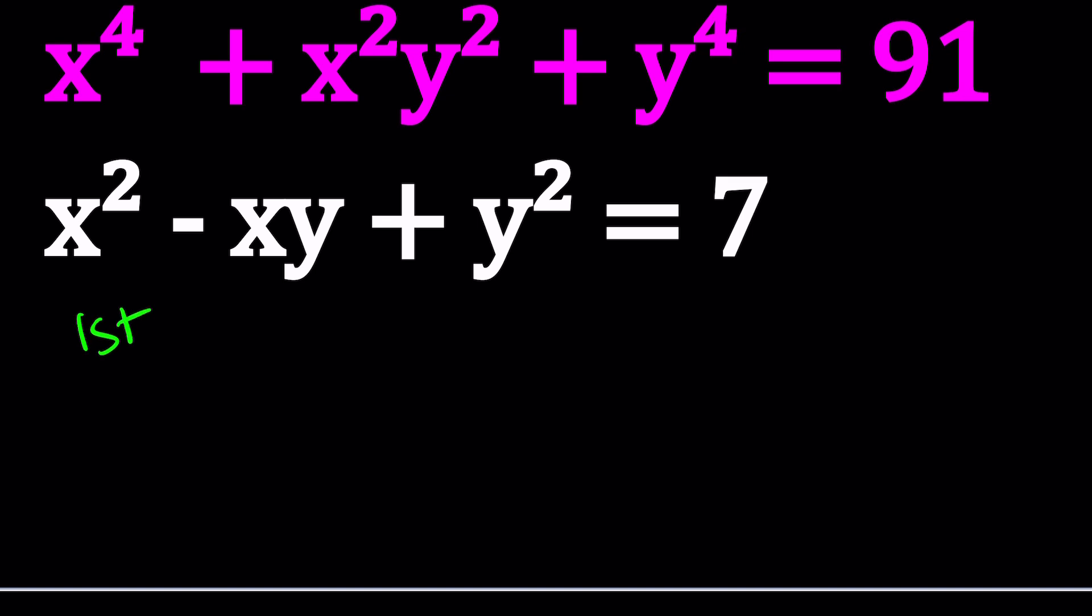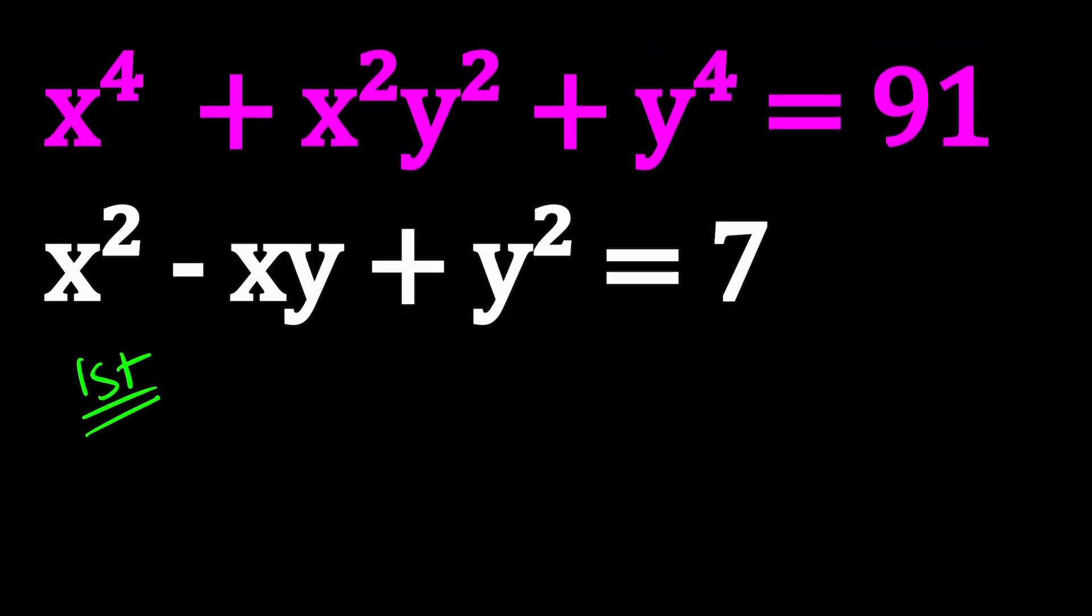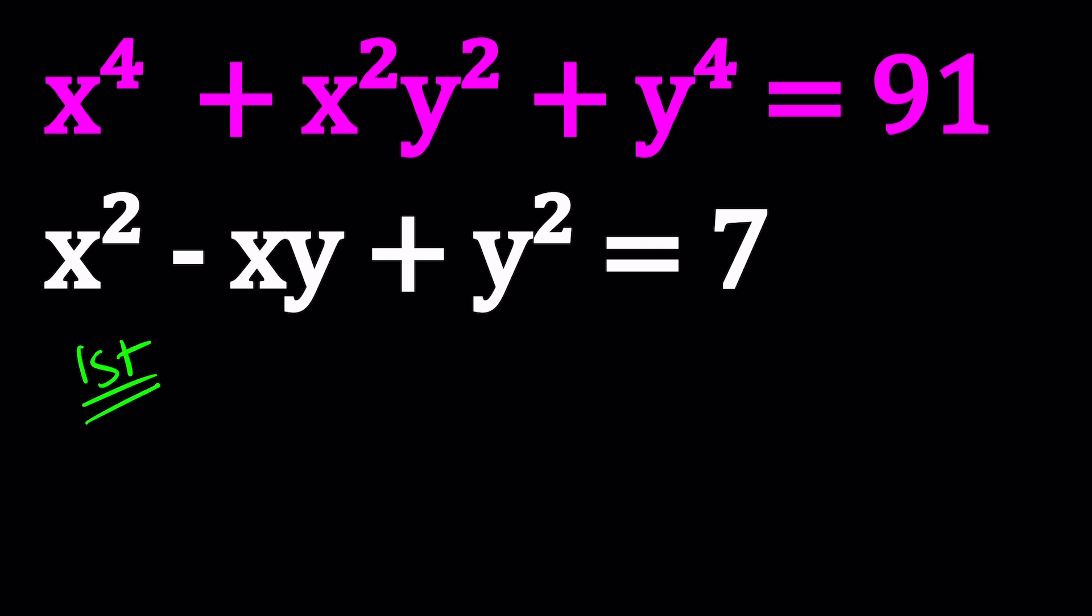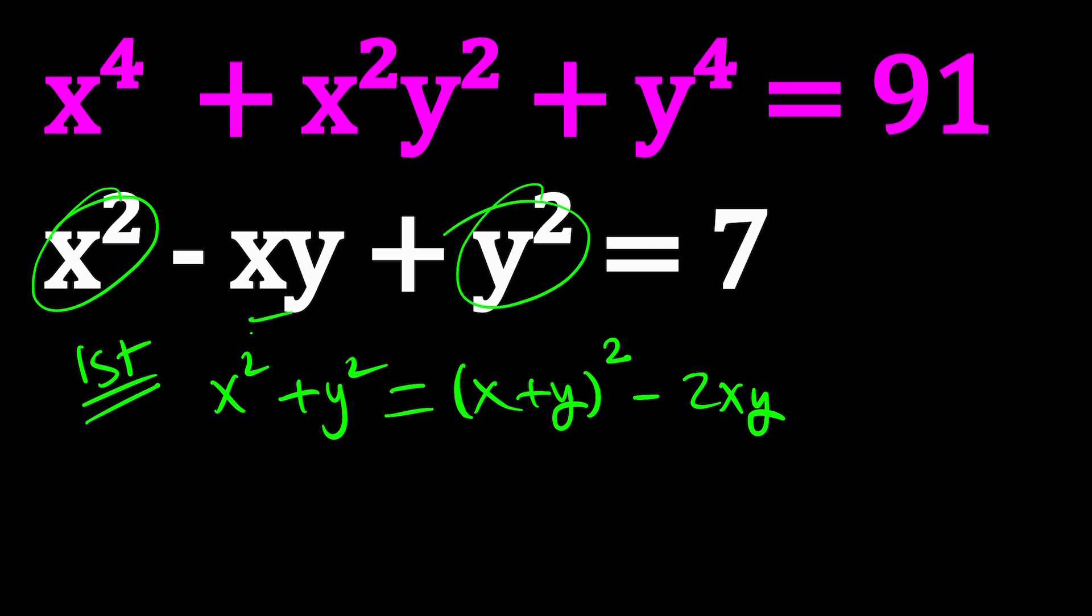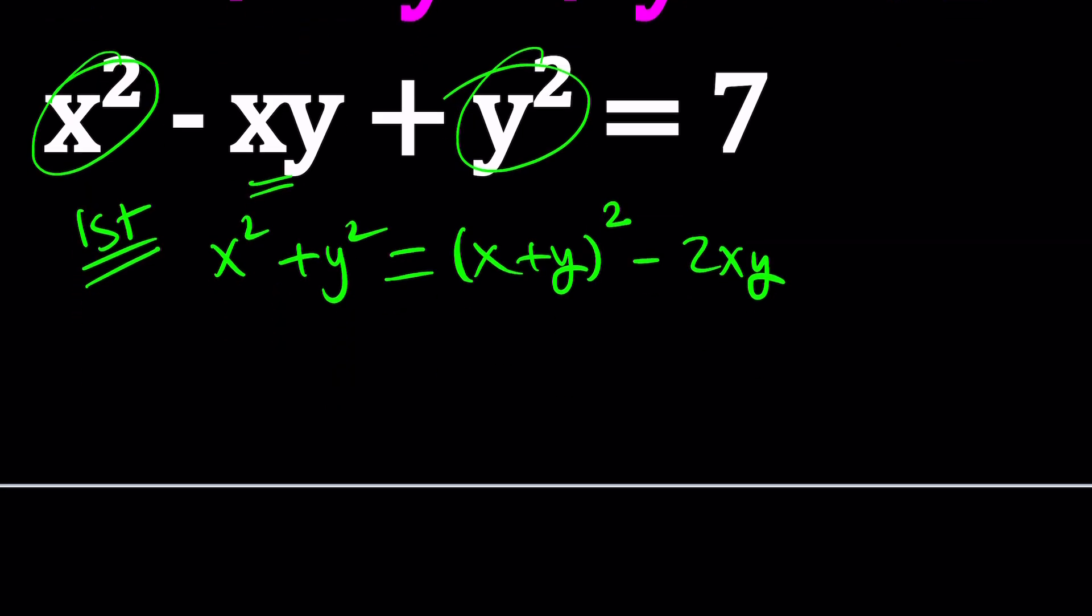So for my first method, I kind of want to use the symmetric equations. So I want to focus on two things: the sum of x and y and the product. Because what we can do here is x squared plus y squared can actually be written as x plus y to the second power minus 2xy. And why is that important? Because we can replace x squared plus y squared with that, along with the minus xy, this is going to turn into x plus y quantity squared minus 2xy minus xy, which is minus 3xy equals 7.